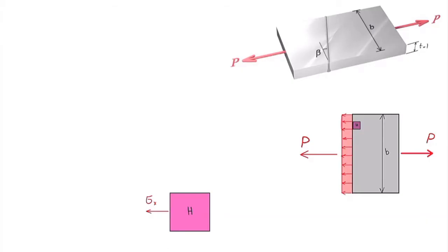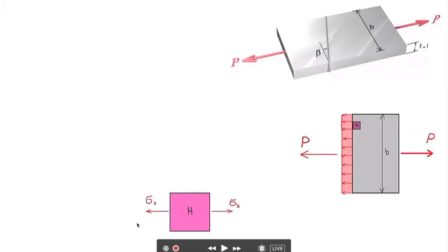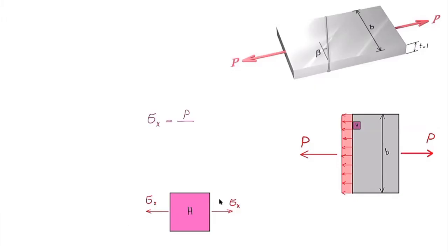In order to maintain equilibrium on this stress block, we need to have the same amount of stress in the horizontal direction on the opposite face. The same is true for stress in the vertical direction — if there were stress vertically, it should exist on two opposite surfaces. But in this case there is no stress in the vertical direction. Now let's calculate how much that stress is: sigma_x equals force divided by area, where force is p and area is the width b multiplied by thickness t.